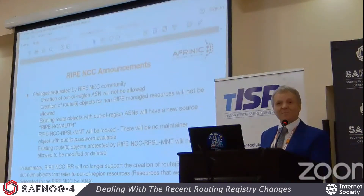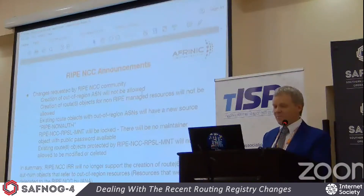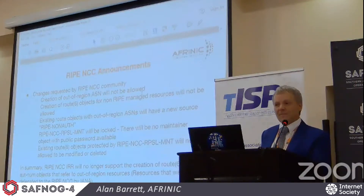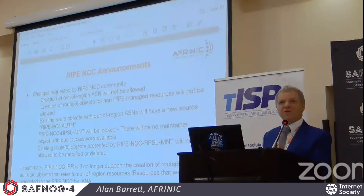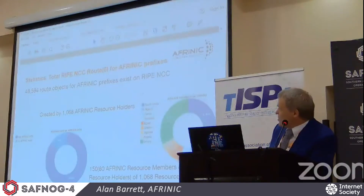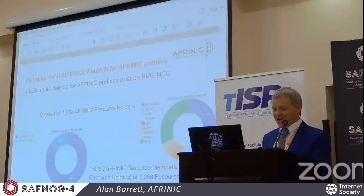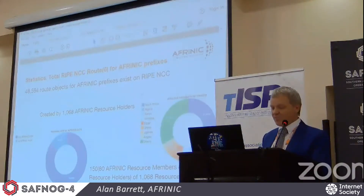But they're not deleting the existing information. If you already had information in the RIPE registry with African address space, you're not allowed to change it, but it will stay there — flagged as non-authoritative. One of the fields in every route object is the origin, and they're changing things from source equals RIPE to source equals RIPE-NONAUTH. That's going to affect African members. These charts show that more than 1,000 African resource holders have created more than 48,000 objects in the RIPE registry.